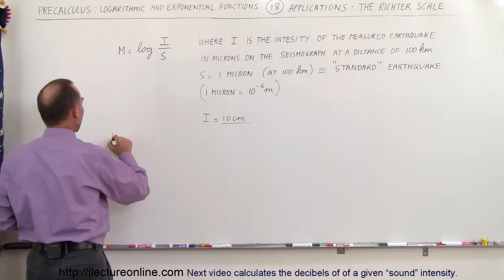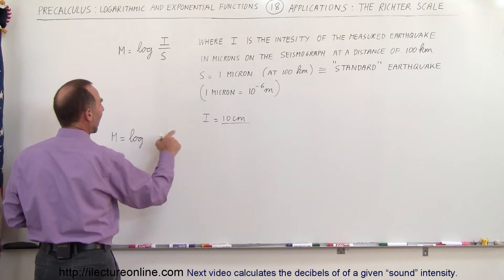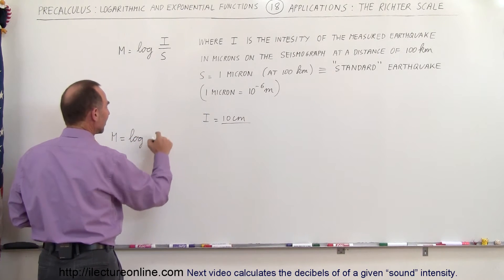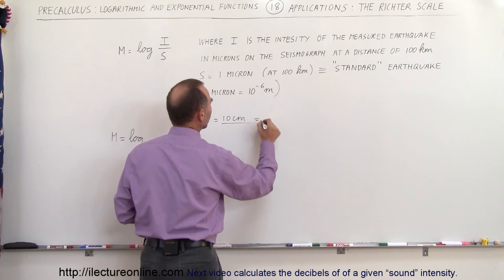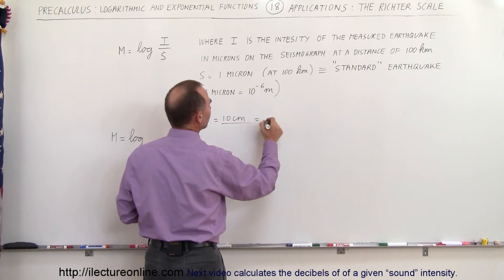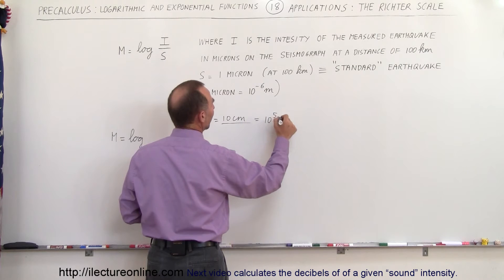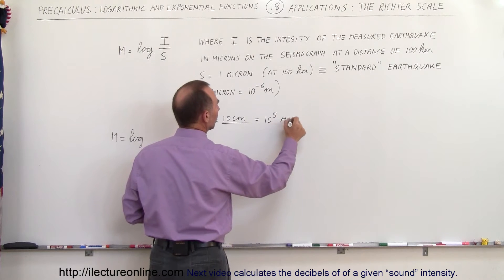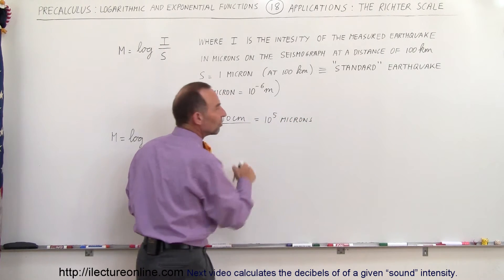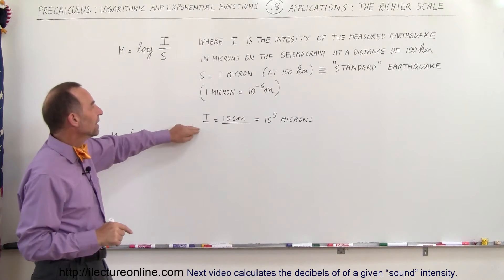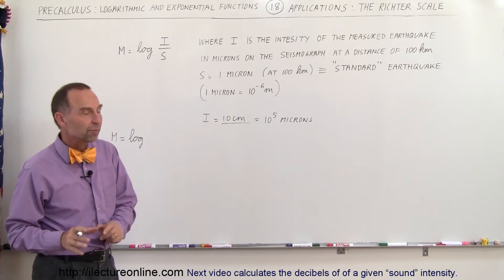Well, m is equal to the log of that ratio. I would be 10 centimeters, and 10 centimeters equals 10 to the fifth microns, because 10 centimeters is one tenth of a meter, and a meter is 10 to the sixth microns.